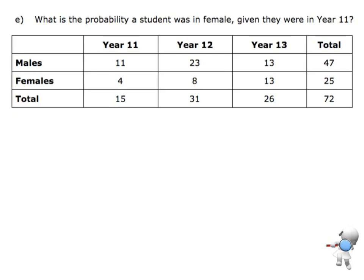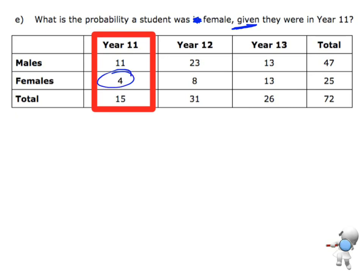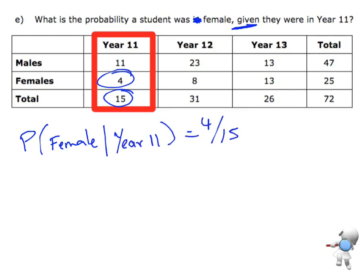What's the probability a student was female given they were in Year 11? The word 'given' is a big clue. We know they are in Year 11, so I'm going to focus on the Year 11s — there are 15 students in Year 11. From those 15 students, how many are female? 4 students. So the probability that they are female given they're in Year 11 is 4 out of 15.